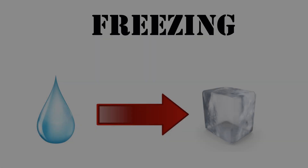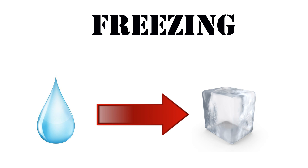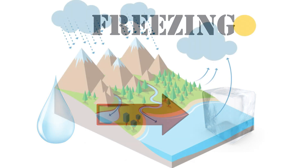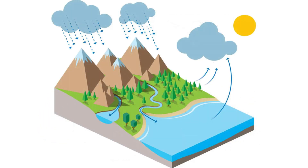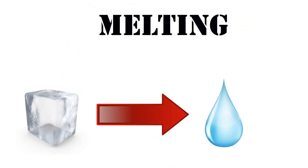If the drops of water freeze when they fall, they turn into ice. Freezing is the change of state of water from liquid to solid. Snow and ice eventually melt after they hit the ground. Melting is the change of state of water from solid to liquid.